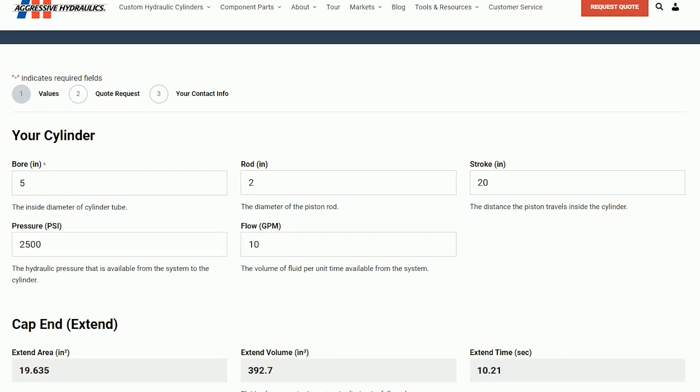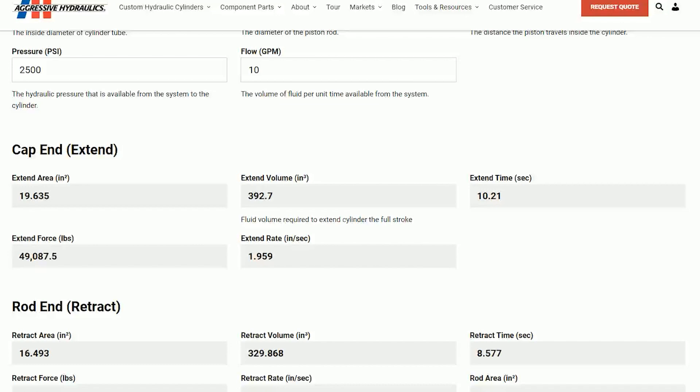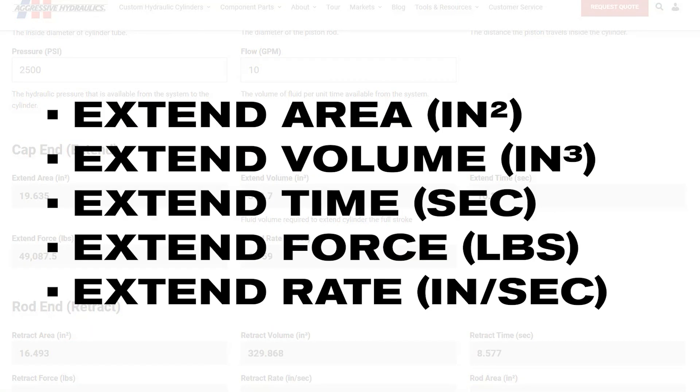For the cap end of the cylinder, these are known as the extend properties. The form calculates the extend area, volume, time, force, and rate.